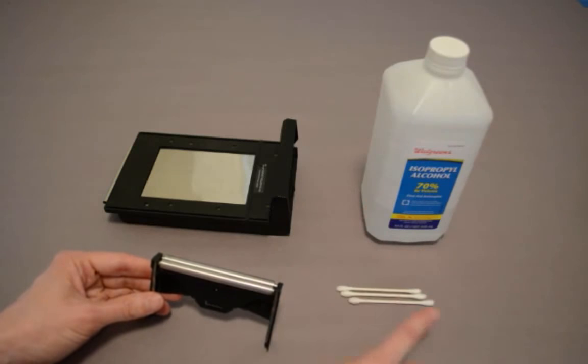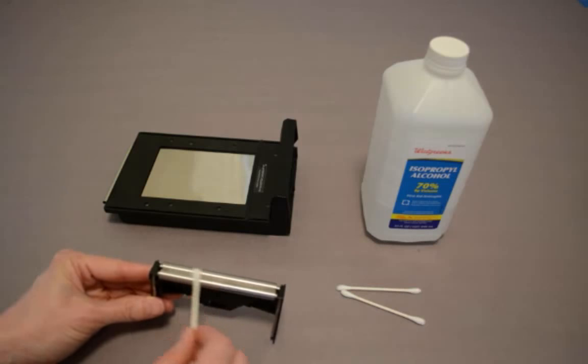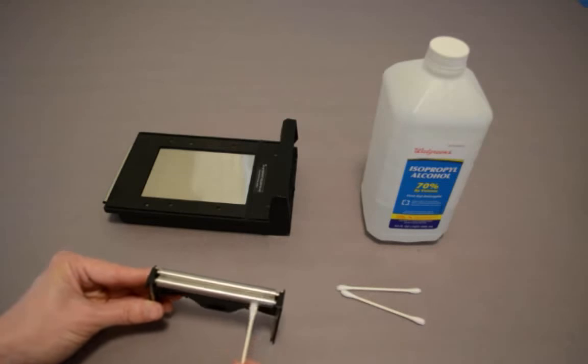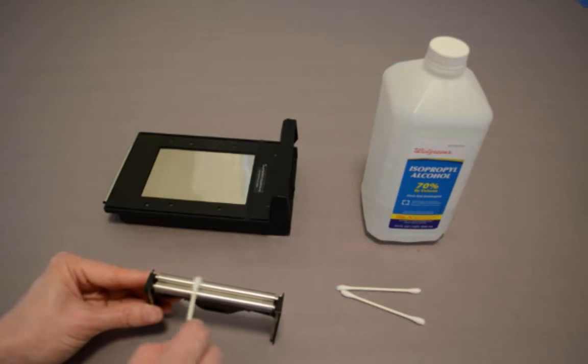Use rubbing alcohol on a cotton q-tip and gently clean the rollers of any chemicals or debris. Be very careful not to scratch the rollers and be very careful to remove all chemicals without getting it on your hands.